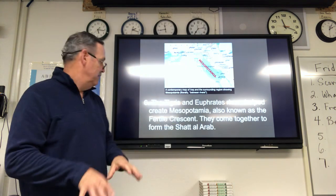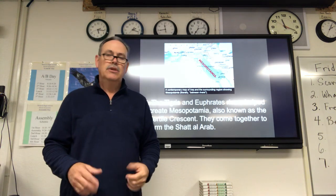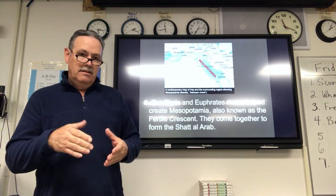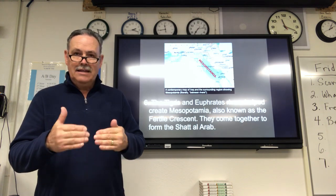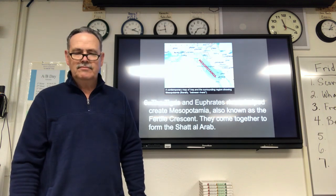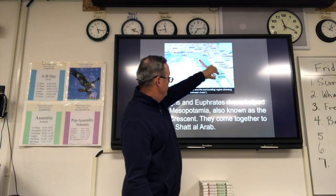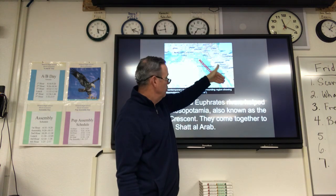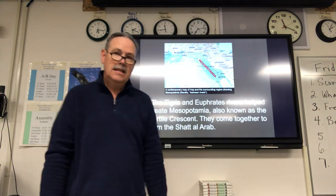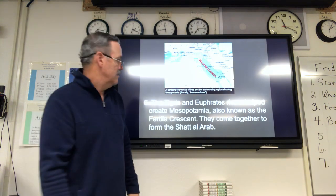Those two rivers come together to form what is called the Shatt al-Arab. There's a really interesting story: at one point there was a city right on the coast of the Persian Gulf, but over time, as these two rivers emptied into the Gulf, silt built up, and that city is now 75 miles from the water.